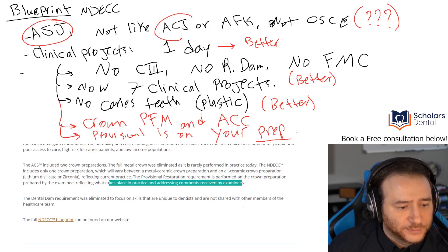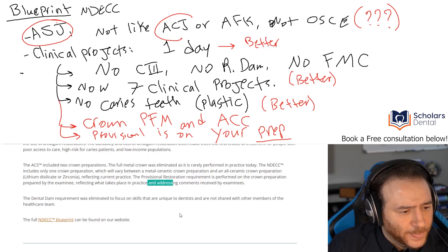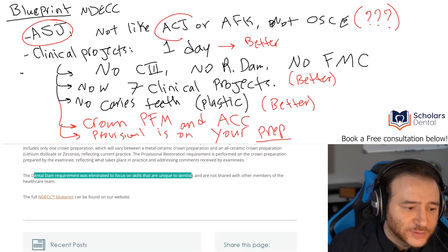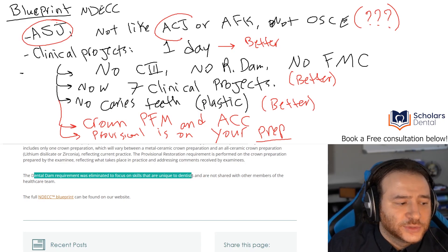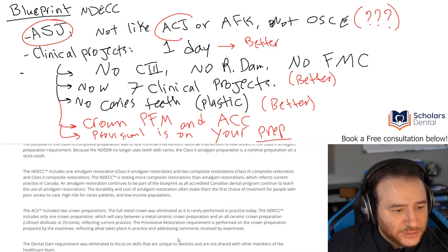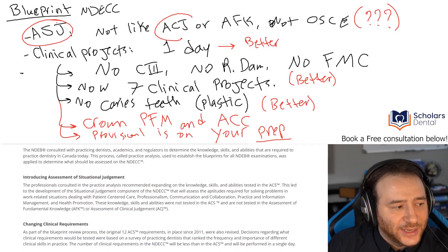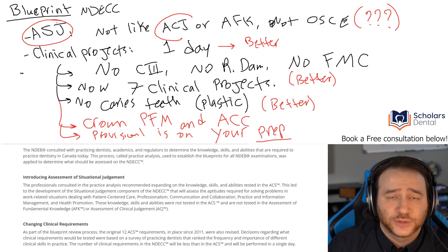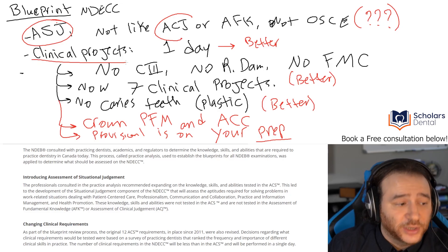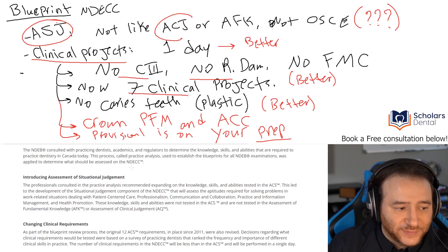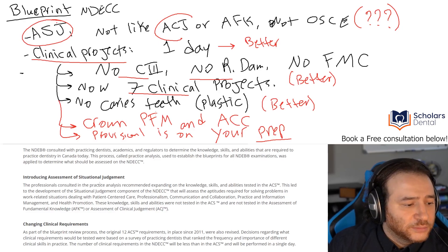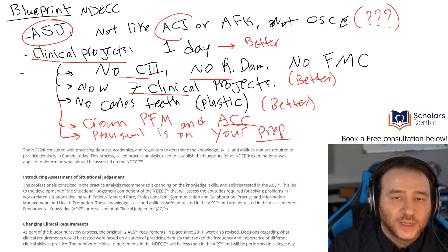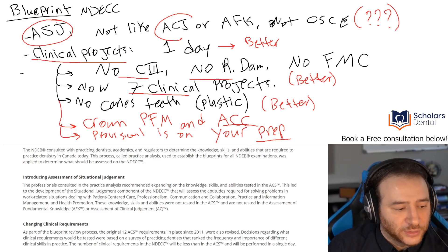The dental dam crown was eliminated because dental assistants could do it, so there's no reason to waste time testing dentists on it. Here's the summary: the ASJ is not like ACJ or AFK — it's more focused on professionalism. Clinical projects can be done in one day. No class three, no rubber dam, no full metal crown. Seven clinical projects remain. No caries teeth — plastic teeth only. Crown options are PFM and all-ceramic. Provisional is on your own prep, which I find better since it gives you more thickness and predictability.